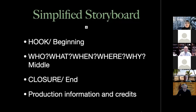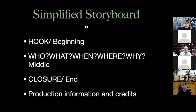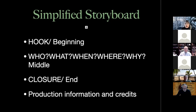A simplified storyboard has panels on which you're going to put visuals and words. A simple storyboard would have four panels: one for the hook or beginning of your story — something that will capture your audience; one for the middle, explaining who, what, when, where, and why; one for a closure or end that wraps everything up; and a panel for production information and credits.